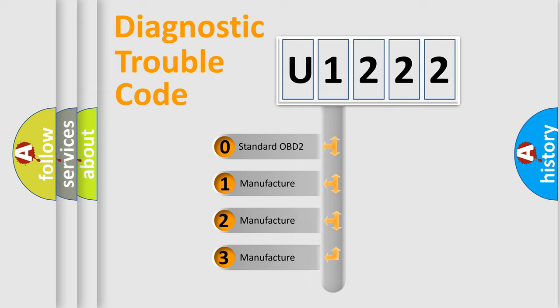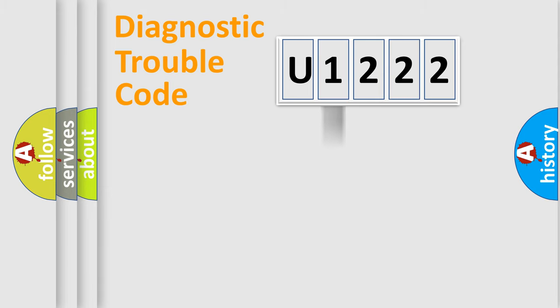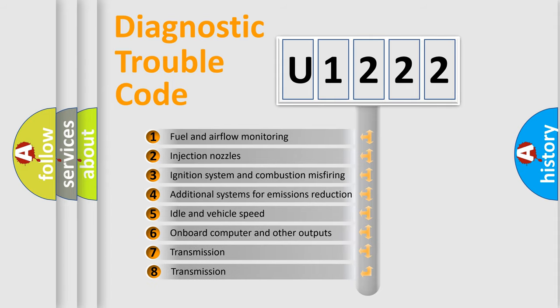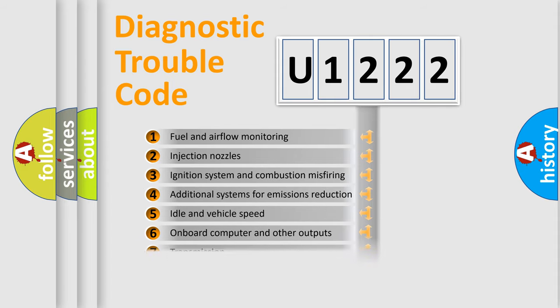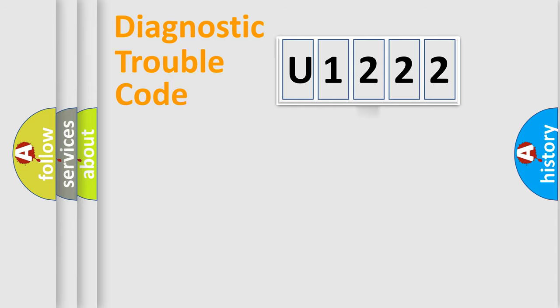If the second character is expressed as zero, it is a standardized error. In the case of numbers 1, 2, or 3, it is a manufacturer-specific expression of the car-specific error. The third character specifies a subset of errors. This distribution is valid only for the standardized DTC code.